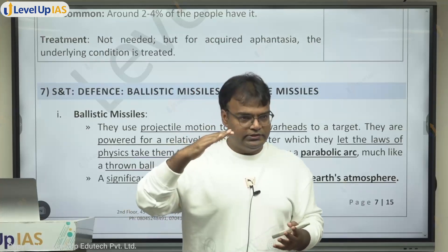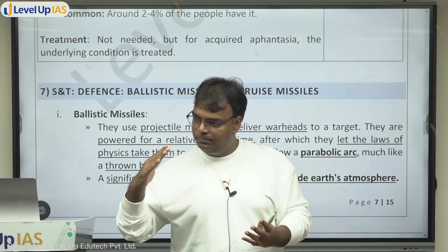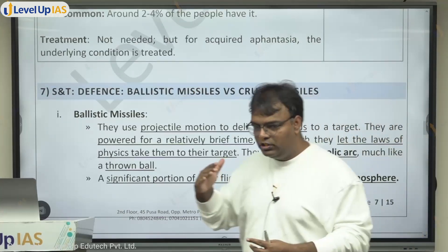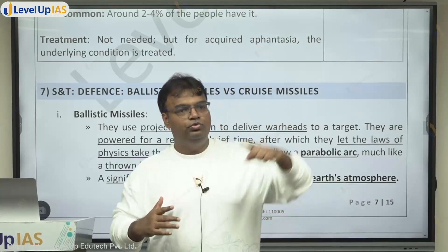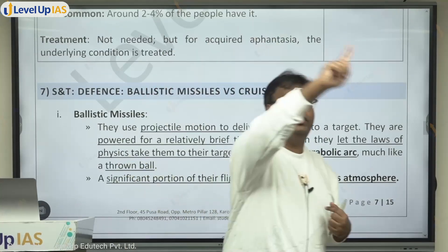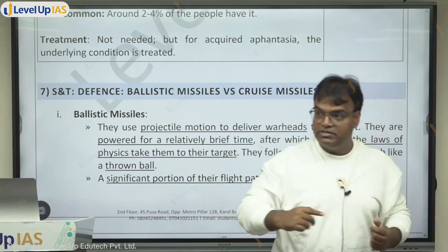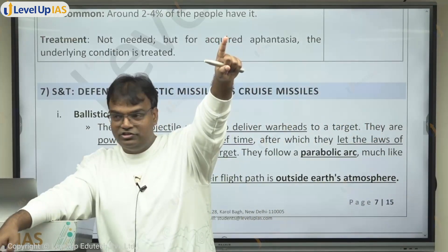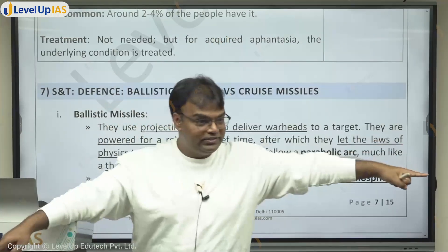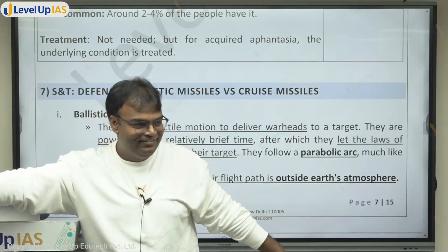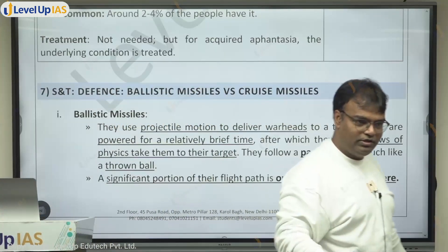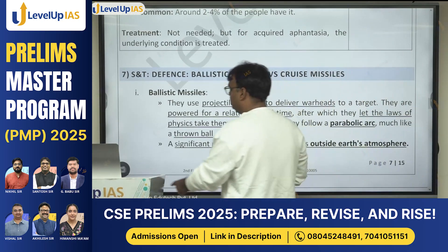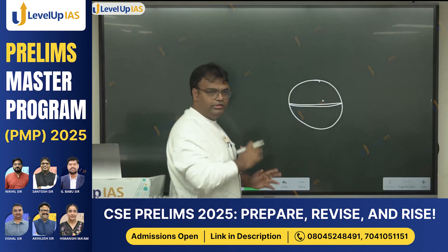A missile is a rocket-kind of device which you launch from one place and it goes and takes a bomb to another place. Missiles can be surface-to-surface, surface-to-air, air-to-air, air-to-underwater, underwater-to-surface, and underwater-to-underwater — like from submarines and destroyers. These are all missiles. We broadly divide missiles into two categories, and we'll come to the notes section for that.